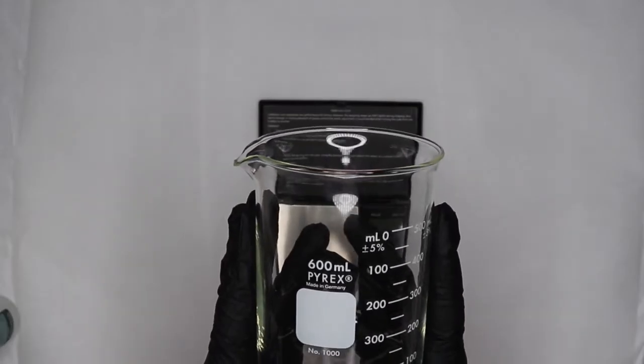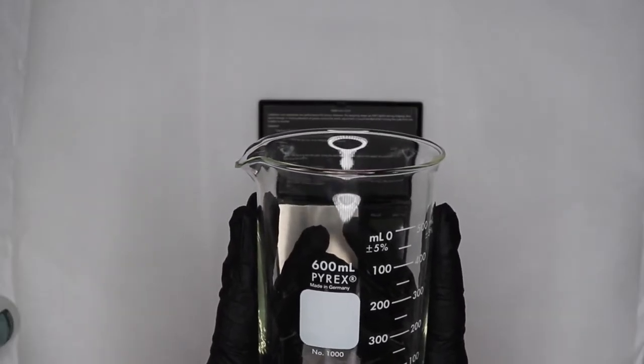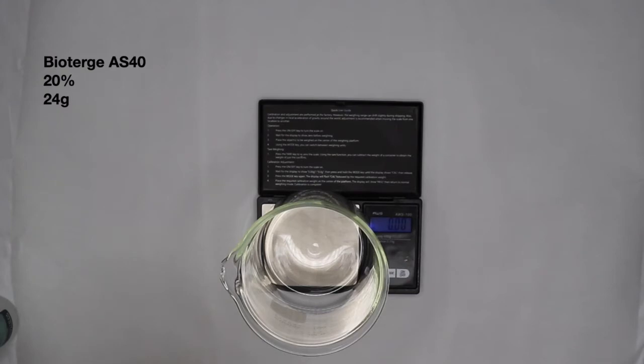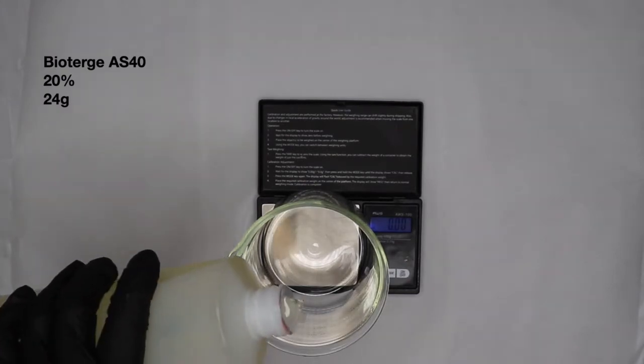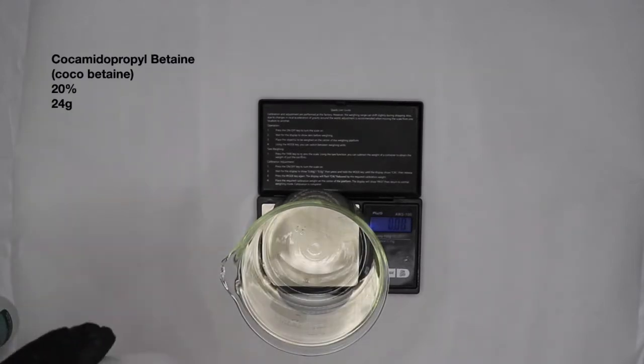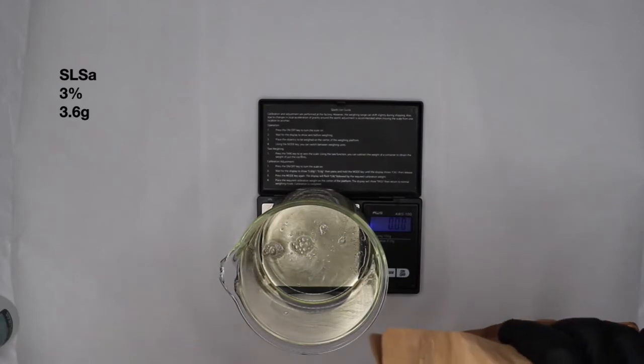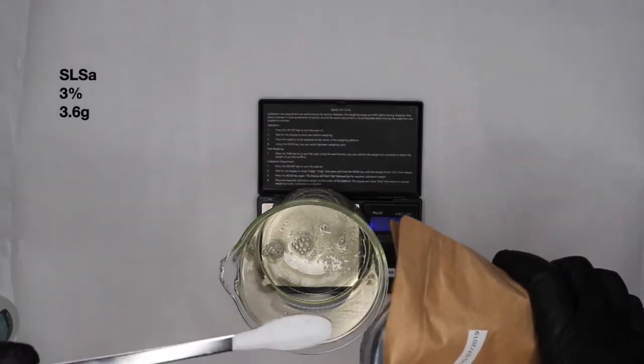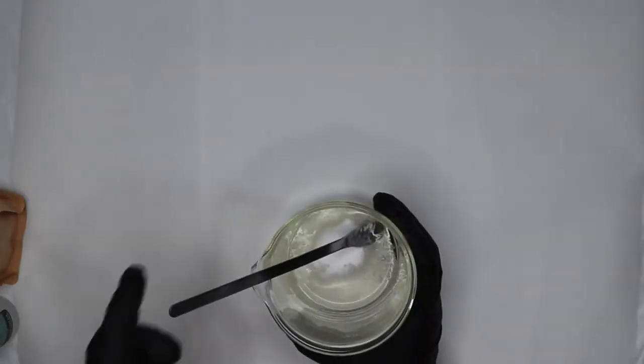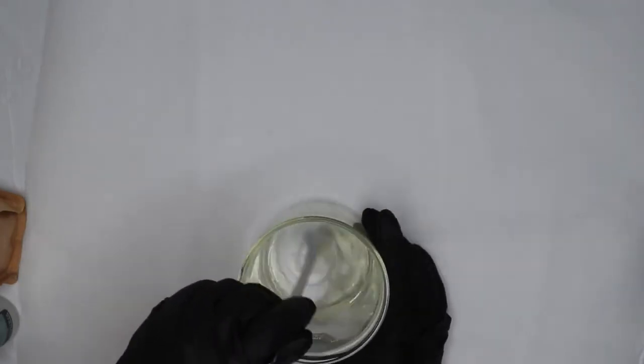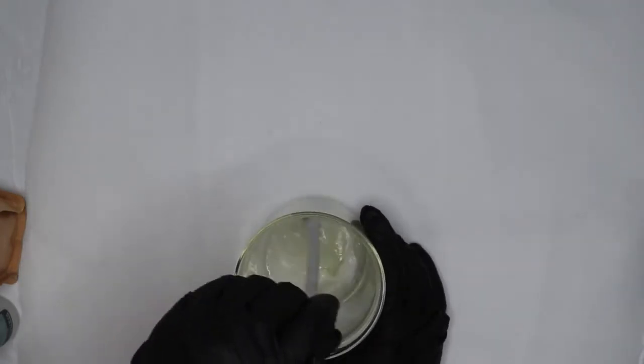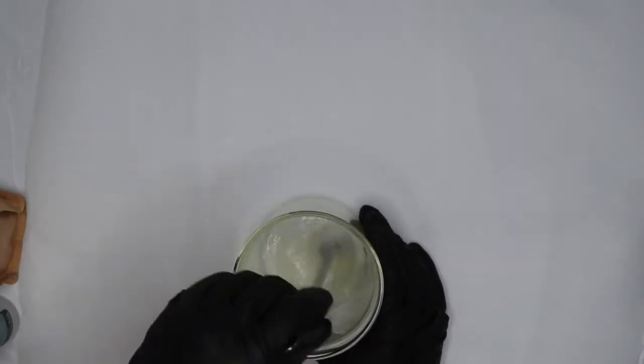In this 600 ml beaker I will be adding my surfactant phase. 24 grams of BioTurne AS40, 24 grams of cocovetain, 3.6 grams of SLSA, and then you want to just stir it. It's going to become very viscous.